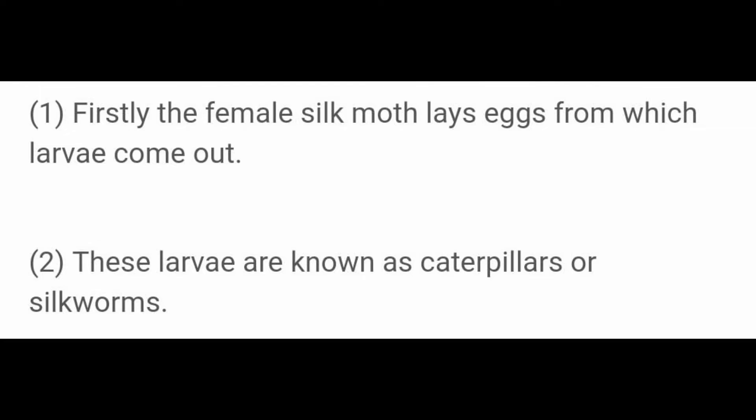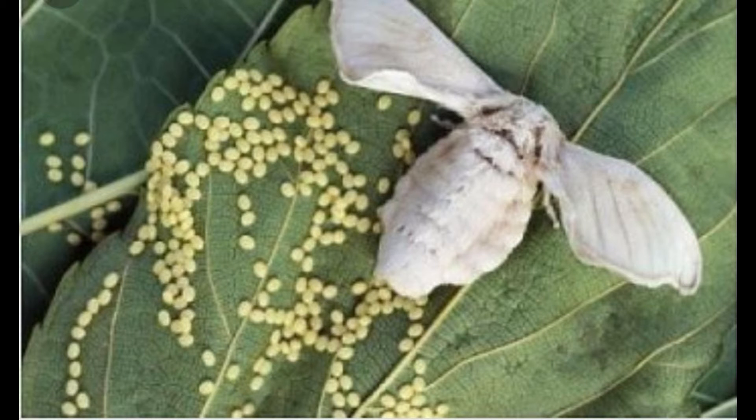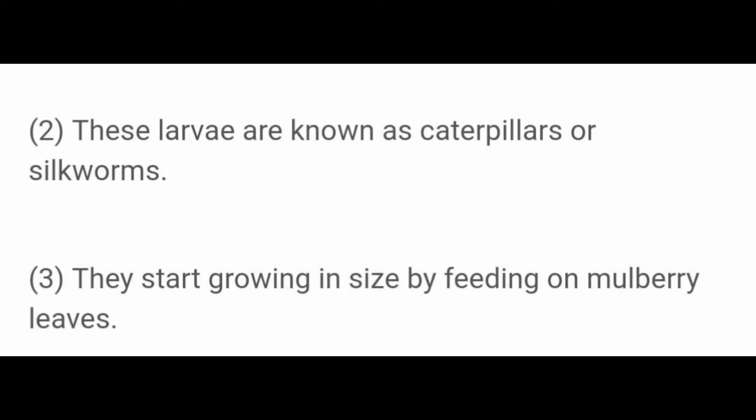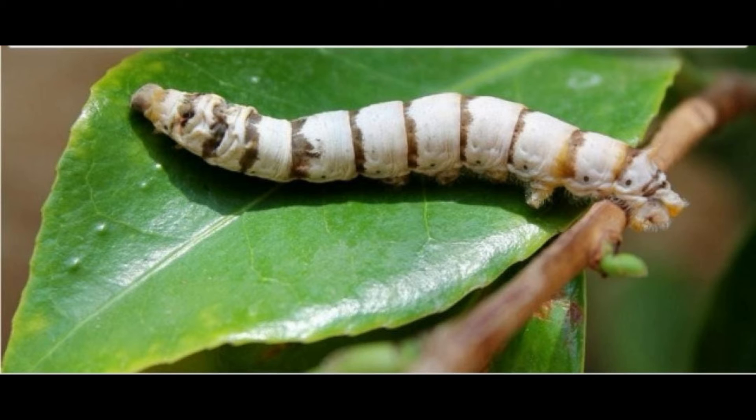In the first stage, the female silk moth lays eggs. In the second stage, the eggs are hatched into very small larvae within a week. These larvae feed on mulberry leaves. They look like worms and are called caterpillars.